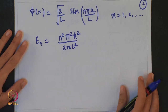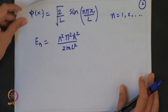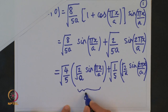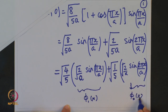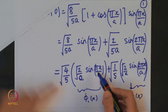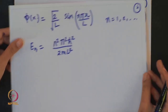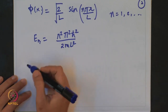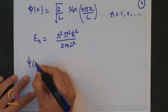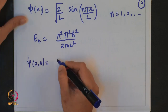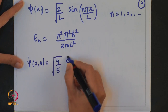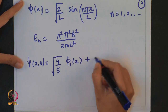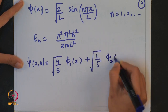Using this, the first expression we had corresponds to φ₁(x) where n=1, and the second term is φ₂(x) where n=2. Coming back to the wave function, I can write it as (4/5) φ₁(x) plus (1/5) φ₂(x).